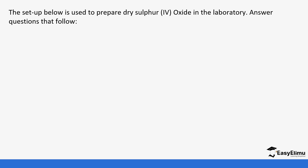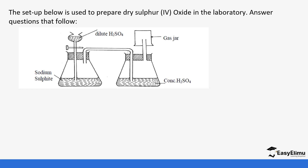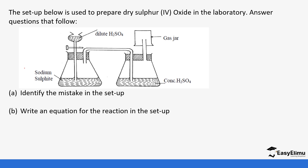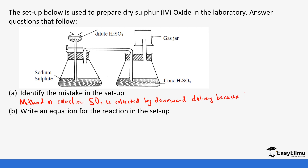Let's look at a practice question. The setup shown is used to prepare dry sulfur dioxide in the lab. We have sodium sulfite and dilute sulfuric acid in the dripping funnel, passed through concentrated sulfuric acid and collected. Identify the mistake in the setup. The mistake is in the method of collection: sulfur dioxide must be collected by downward delivery because it is heavier than air.